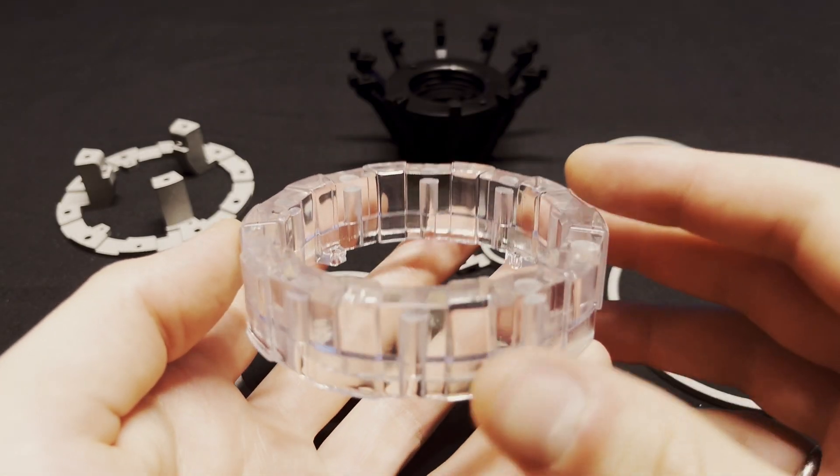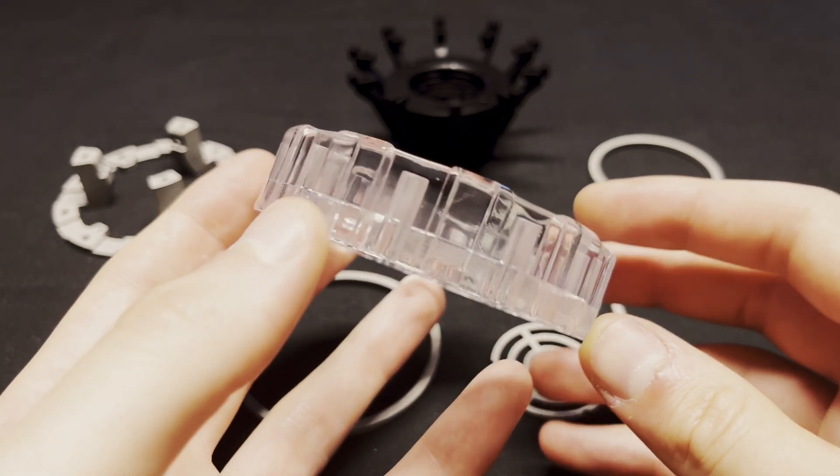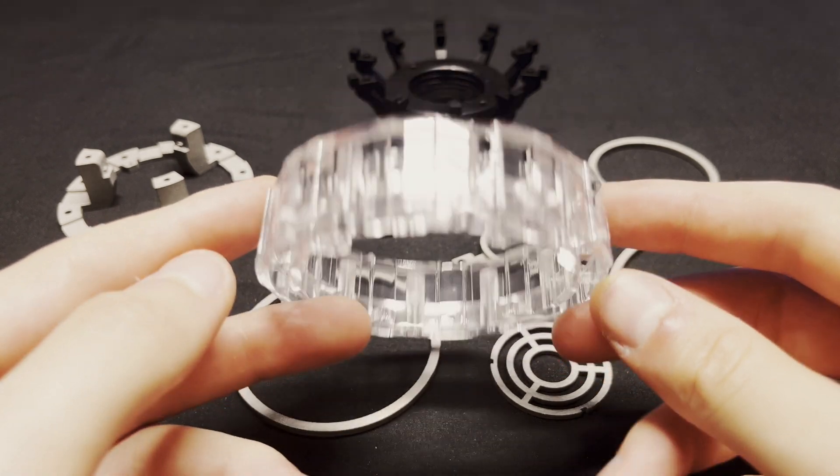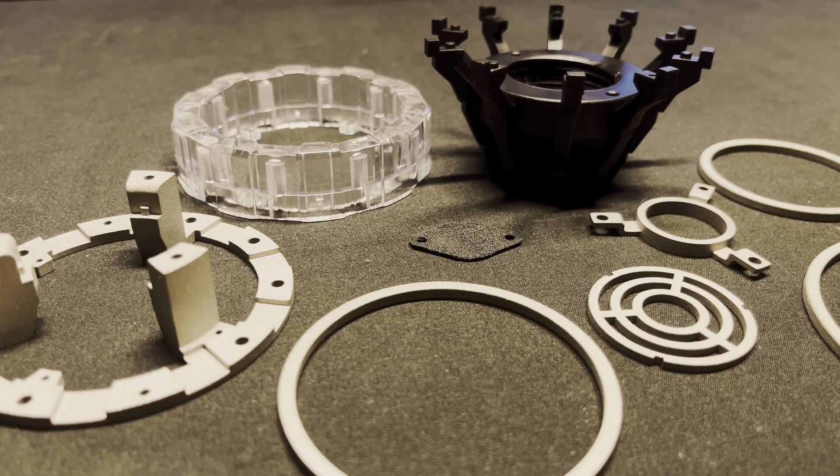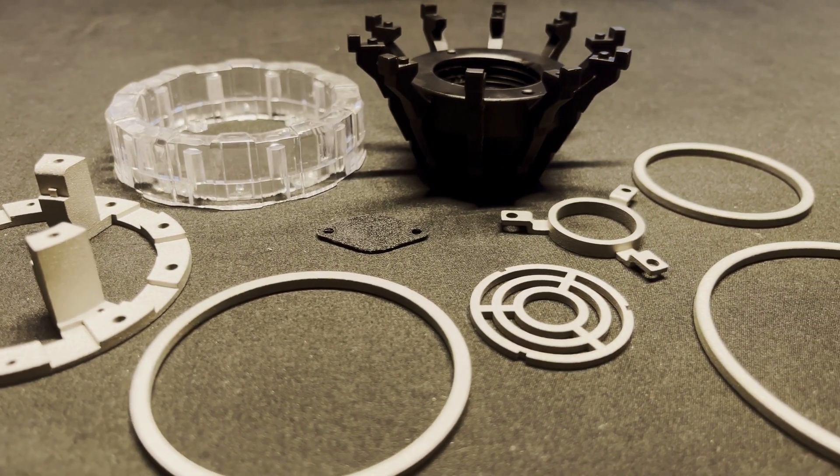I've never worked with 3D printed transparent resin before and one of the things that really surprised me was the clarity. It literally looks like glass and I don't have to do any post processing on the surface. I'm super happy with how all these parts came out and I can't recommend JLC 3DP enough for all their awesome 3D printing services.